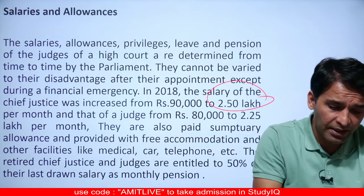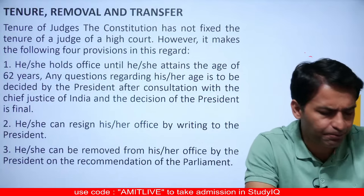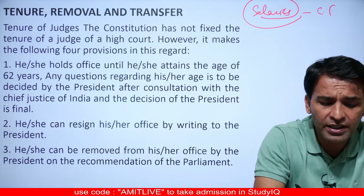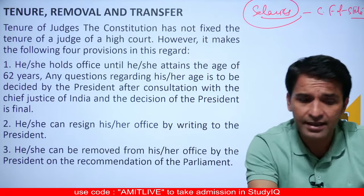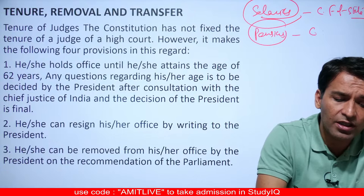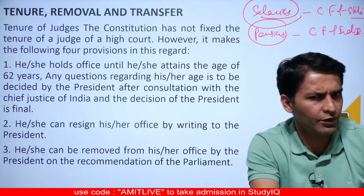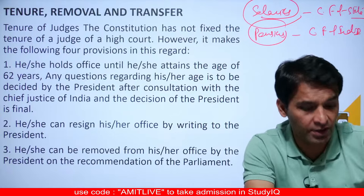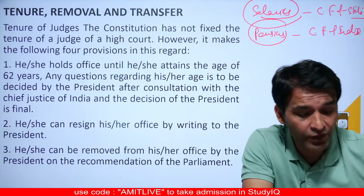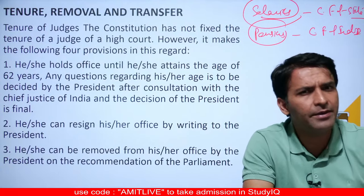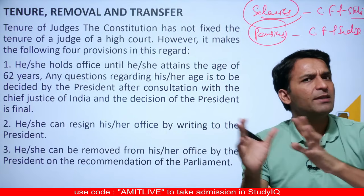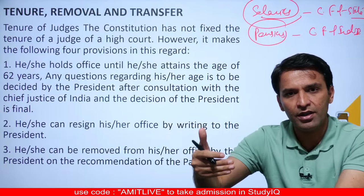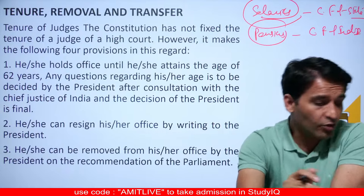High Court judges receive a salary of around several lakhs of rupees, along with pension. The salaries of High Court judges are charged on the Consolidated Fund of the State, while their pensions are charged on the Consolidated Fund of India. There is no fixed tenure or term limit for judges. The retirement age for Supreme Court judges is 65 years, while for High Court judges it is 62 years.